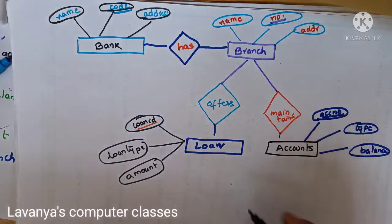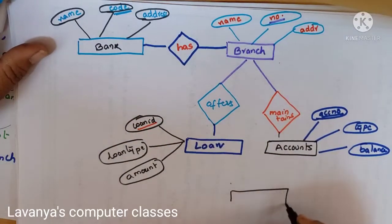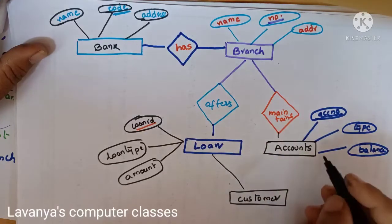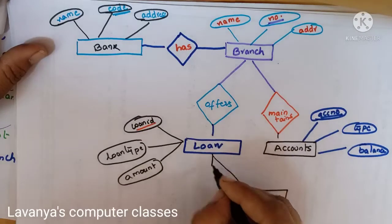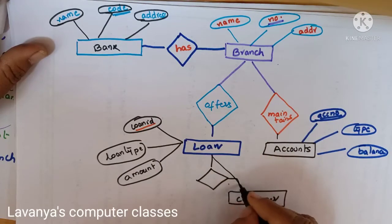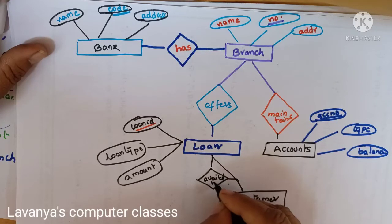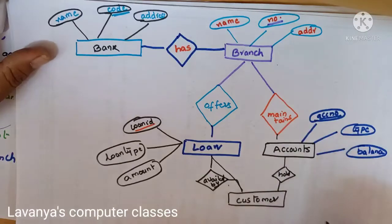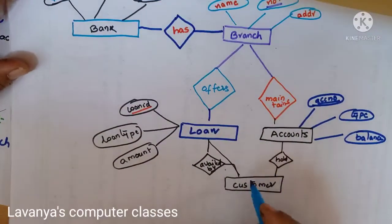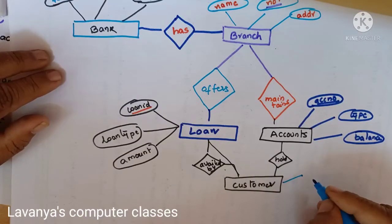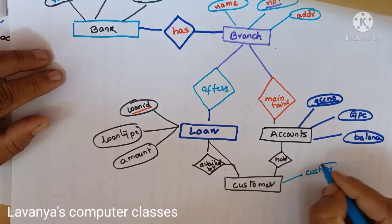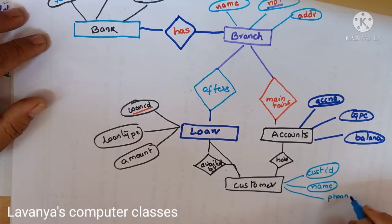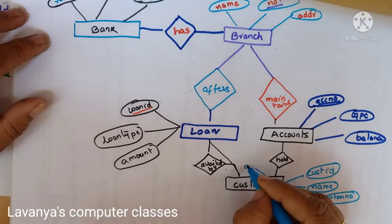Customer is the last entity set. Loans are availed by the customer — that is one more relationship. Accounts are also held by customers. The customer attributes are: customer ID, customer name, phone number, and address.